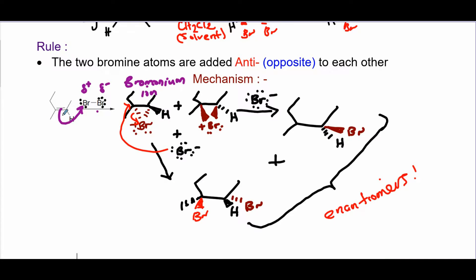First, the diatomic molecule will use one of its halogens, which is acting as partially positive, to be attacked by the pi bond of the alkene. That is the first step. Then that atom is going to use its lone pair to attack the other carbon.